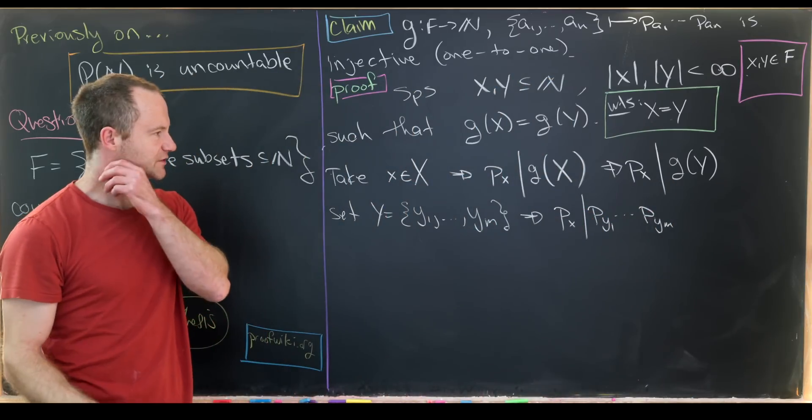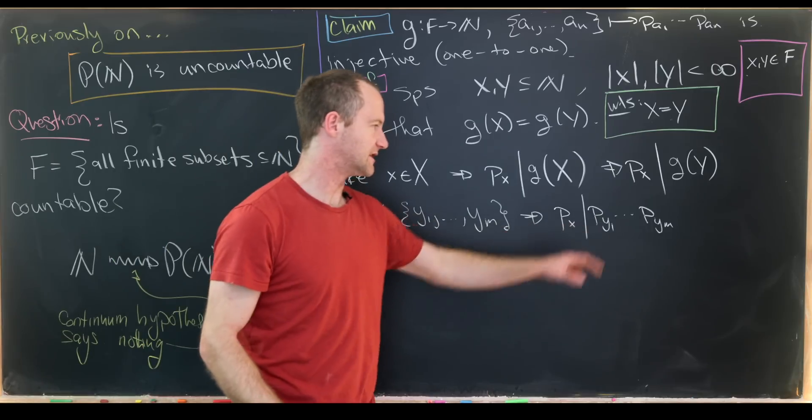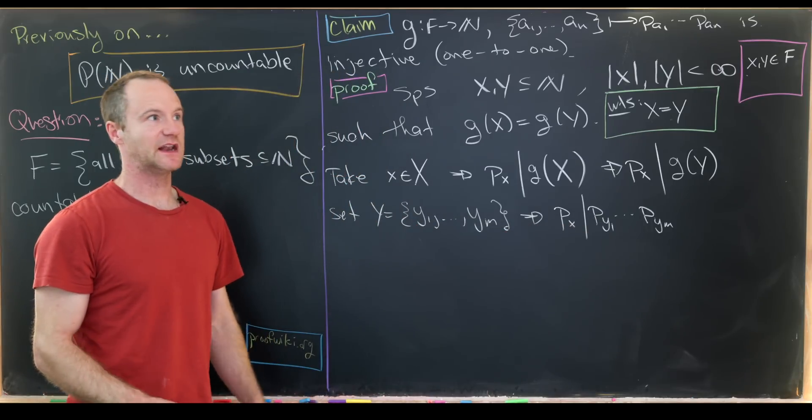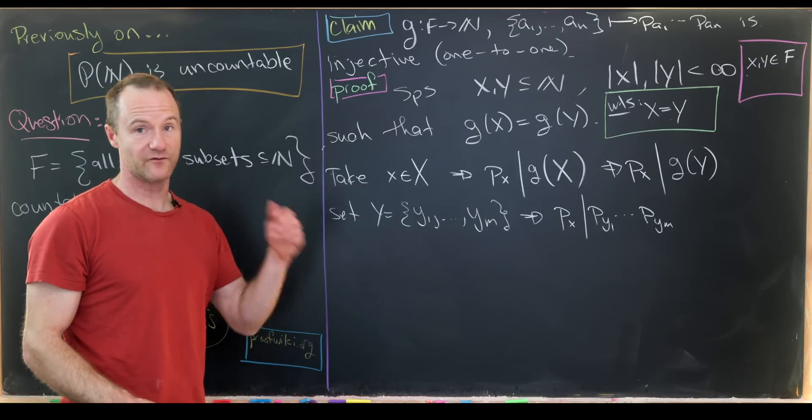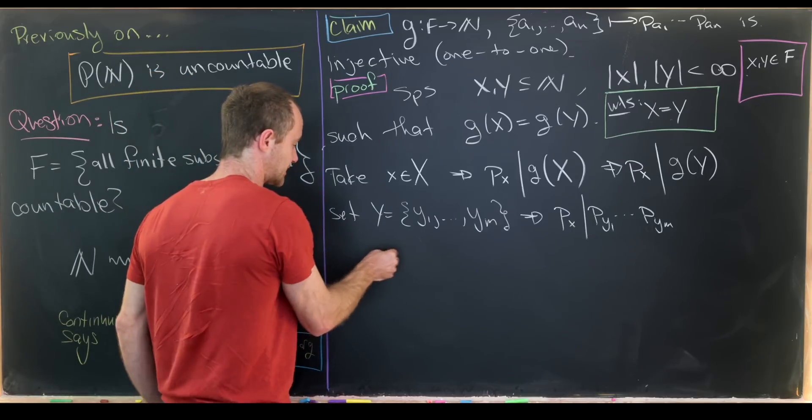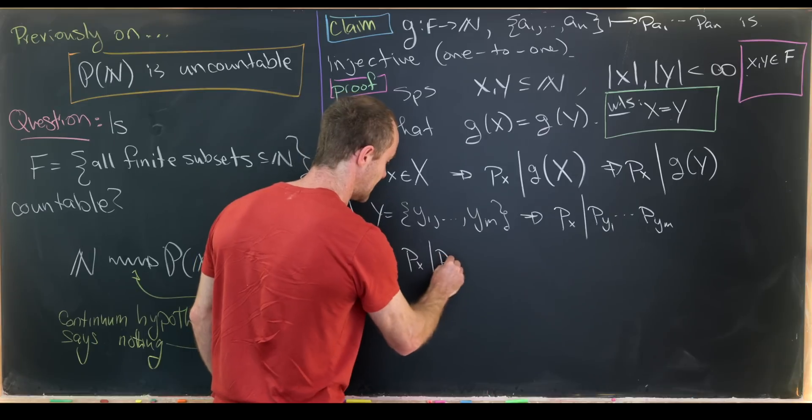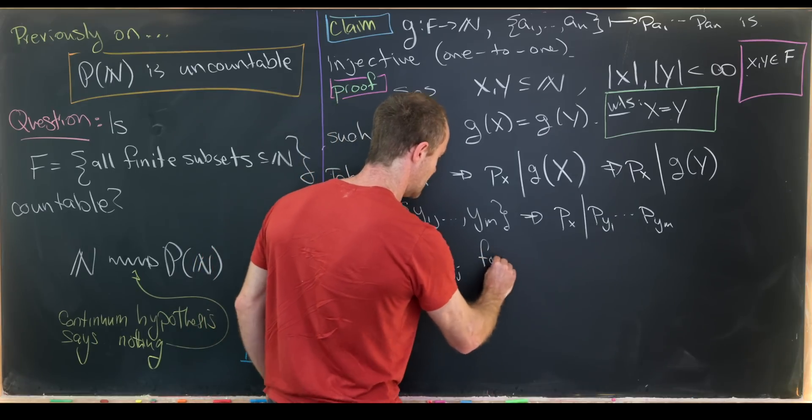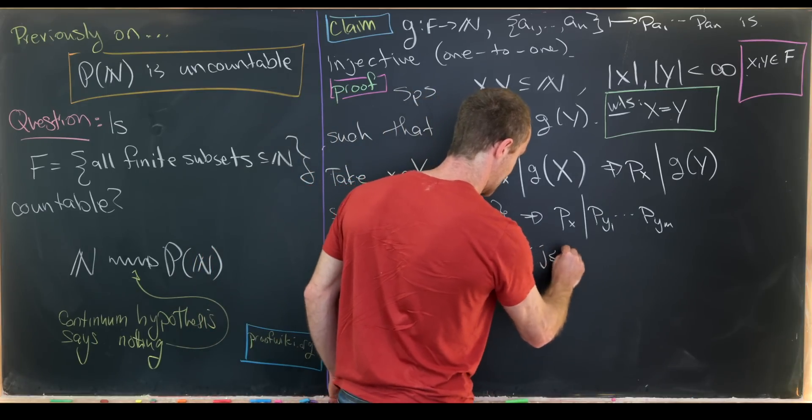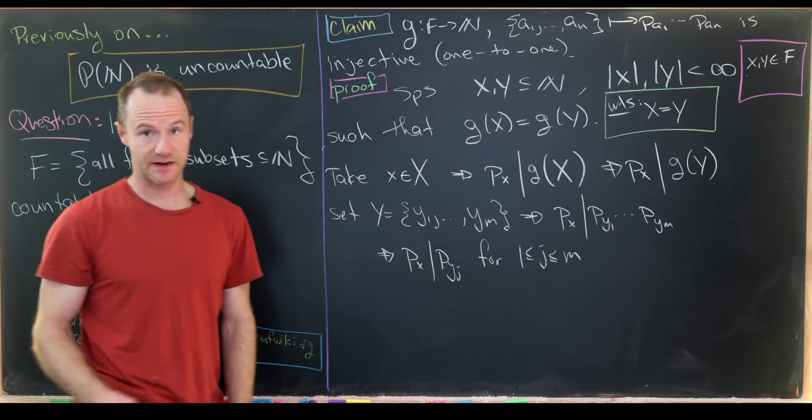This means P_x divides P_{Y1} × ... × P_{Y_M}. Let's recall that if a prime divides a product, then it has to divide one of the terms from that product. In other words, P_x divides P_{Y_J} for some J between 1 and M.